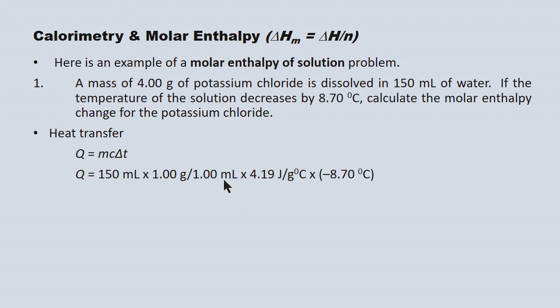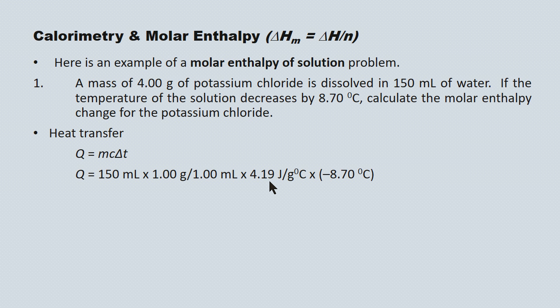We have a conversion factor to get from milliliters to grams, along with the heat capacity for water and our change in temperature. This question involves a solution of potassium chloride in water, not pure water, so you might think the specific heat capacity would differ — and it does, but only slightly. We assume that all solutions in this unit have the specific heat capacity of pure water, so we'll use 4.19 joules per gram degree Celsius for all solutions throughout this course.